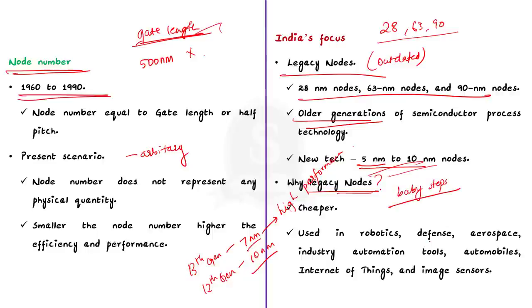The answer is that India is currently taking baby steps in the semiconductor industry. So, starting with legacy nodes can offer numerous advantages. As I already said, the most advanced nodes are used in devices like smartphones and laptops. But legacy nodes are most popular in the robotics, defense, aerospace, industry automation tools, automobiles, internet of things and image sensor sector. This is because the legacy nodes are cheaper than the advanced nodes. So, it is a rational choice to start with the legacy nodes, acquire experience and knowledge over time and finally move on to the advanced nodes. This will help India in realizing the dream of becoming a semiconductor hub of the world. This is all regarding this discussion.